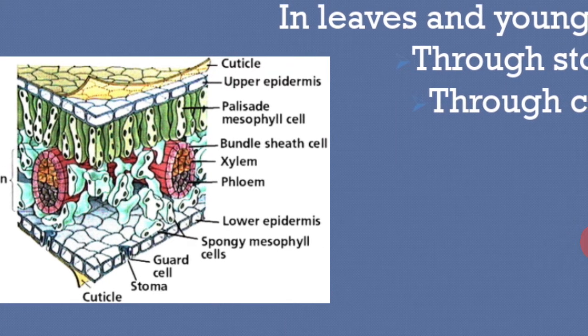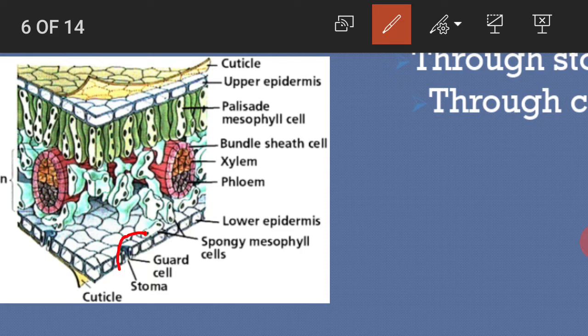You can see there are two guard cells and there is a space which is called a stoma. The oxygen from the air is taken in through stomata and carbon dioxide is let out through stomata.